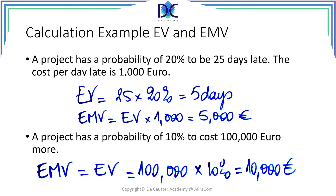Let's look at the second risk. The probability of being late and costing more than one hundred thousand euro is 10%. In this case we talk about money, so the expected monetary value is equal to the expected value: one hundred thousand times 10% is ten thousand euro. Simple calculations, but you have to remember all of them as it can sometimes be a little confusing.